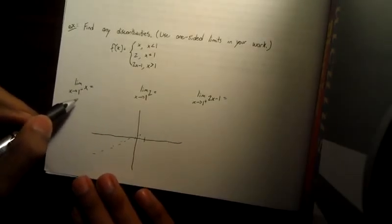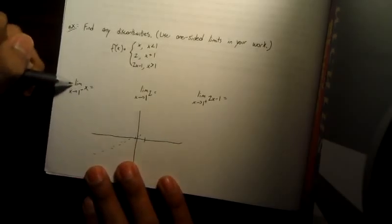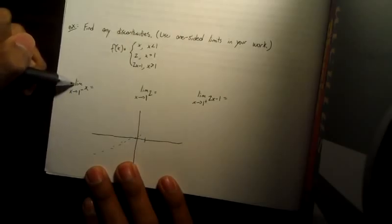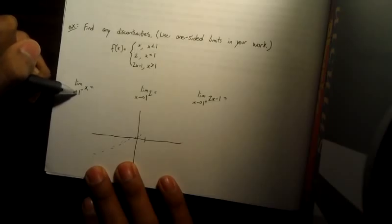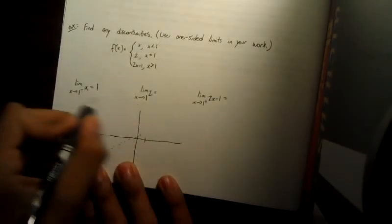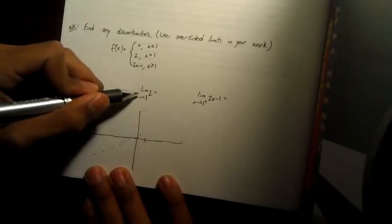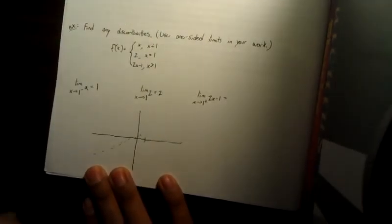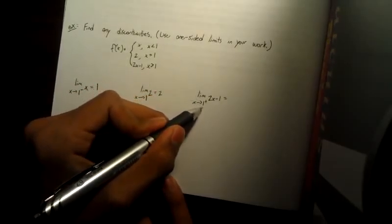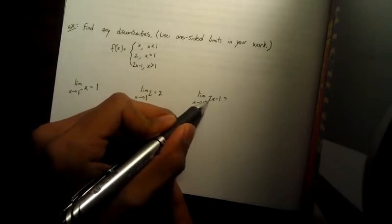Recalling the properties of limits, you can just do direct substitution. The limit as x approaches one of x equals one — the little signs are just indicators as to which side you're coming from. The limit as x approaches one of two is just two. And the limit as x approaches one from the positive of two x minus one equals one.